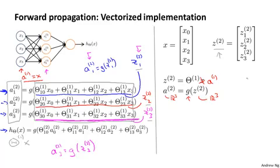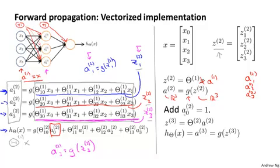Now, with what I've written so far, I've now gotten myself the values for a1, a2, a3, and really I should put the superscripts there as well. But I need one more value, which is I also want this a02, and that corresponds to a bias unit in the hidden layer that goes to the upper layer. Of course, there was a bias unit here too that I just didn't draw earlier. But to take care of this extra bias unit, what we're going to do is add an extra a0 superscript 2 that's equal to 1. And after taking this step, we now have that a2 is going to be a four-dimensional feature vector because we just added this extra a0, which is equal to 1, corresponding to the bias unit in the hidden layer.